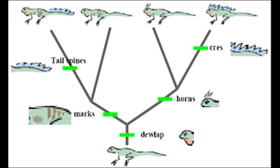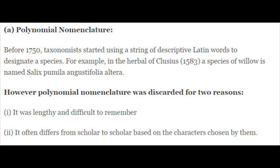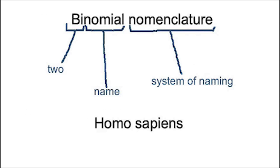Once the groupings became linked to evolutionary groups, and especially when genetic data became available, some species had to be moved between or within groups, but the overall pattern was fairly accurate. The power of the binomial system lies in the fact that it keeps names simple and unique at the same time. A binomial name consists of two parts: the first is the evolutionary group that the species belongs to — the genus — and the second designates the species within that group.